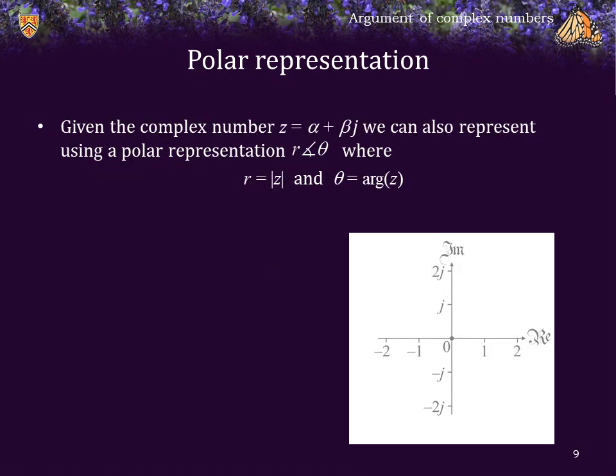Given a complex number z = α + βj, we can also represent this using the polar representation r∠θ, where r is the absolute value of z, and θ is the argument of z. There's a special case where 0 as a complex number is described as 0∠0. The angle symbol is described verbally as phase.